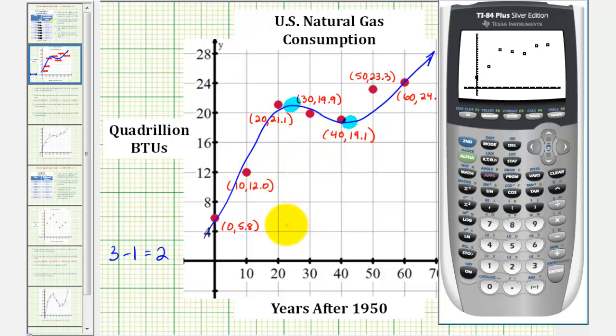Now let's perform our cubic regression, and then we'll also graph the cubic function on top of the scatter plot here. But before we do this, we want to turn our diagnostic feature on, so we can also see the coefficient of determination, or R squared. Because this will give us an idea of how strong the model is.